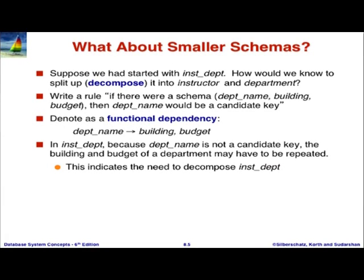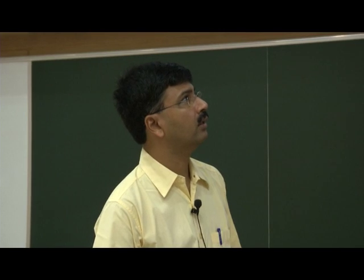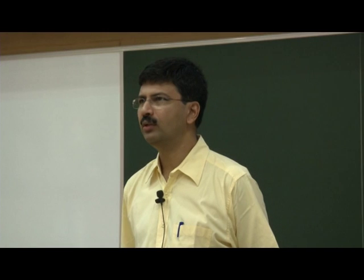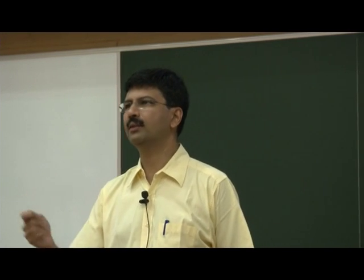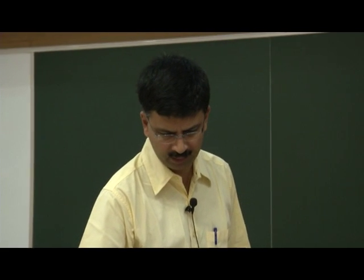We have a functional dependency: department name functionally determines building and budget. When we look at this combined table, is department name going to be unique? No, it can repeat — and therefore the other information will get repeated. That's the key idea. So what we want to do is decompose in order to fix this redundancy problem. But you can't decompose just as you please — if you decompose arbitrarily, some information is lost.